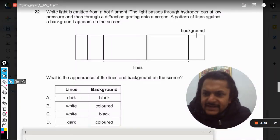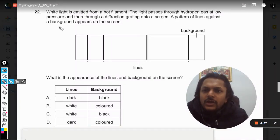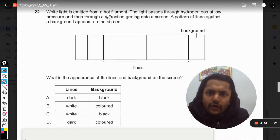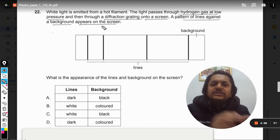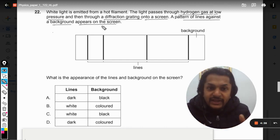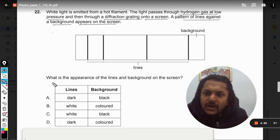Okay dear students, let us see what is there in this question. White light is emitted from a hot filament. The light passes through hydrogen gas at a low pressure and then through a diffraction grating onto a screen. A pattern of lines against the background appears on the screen, and it is found that there are a couple of lines which are missing. So these are the missing lines.